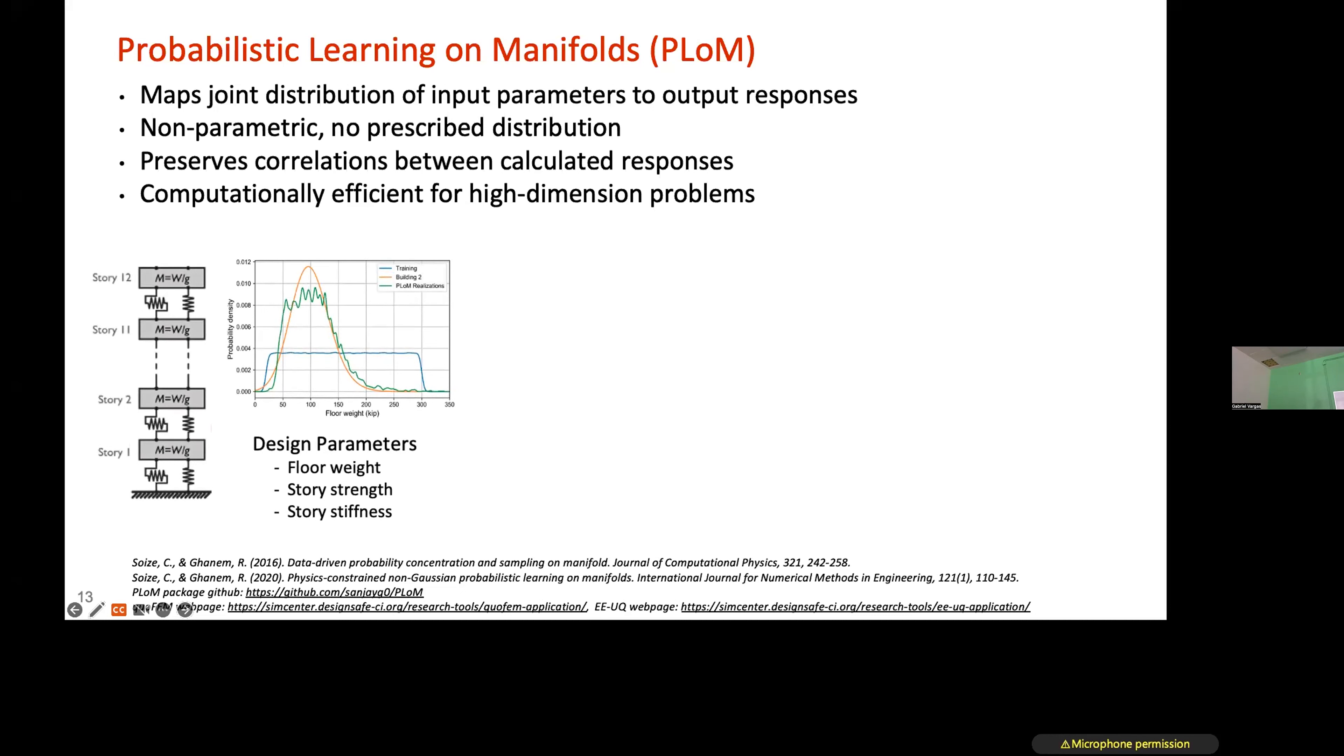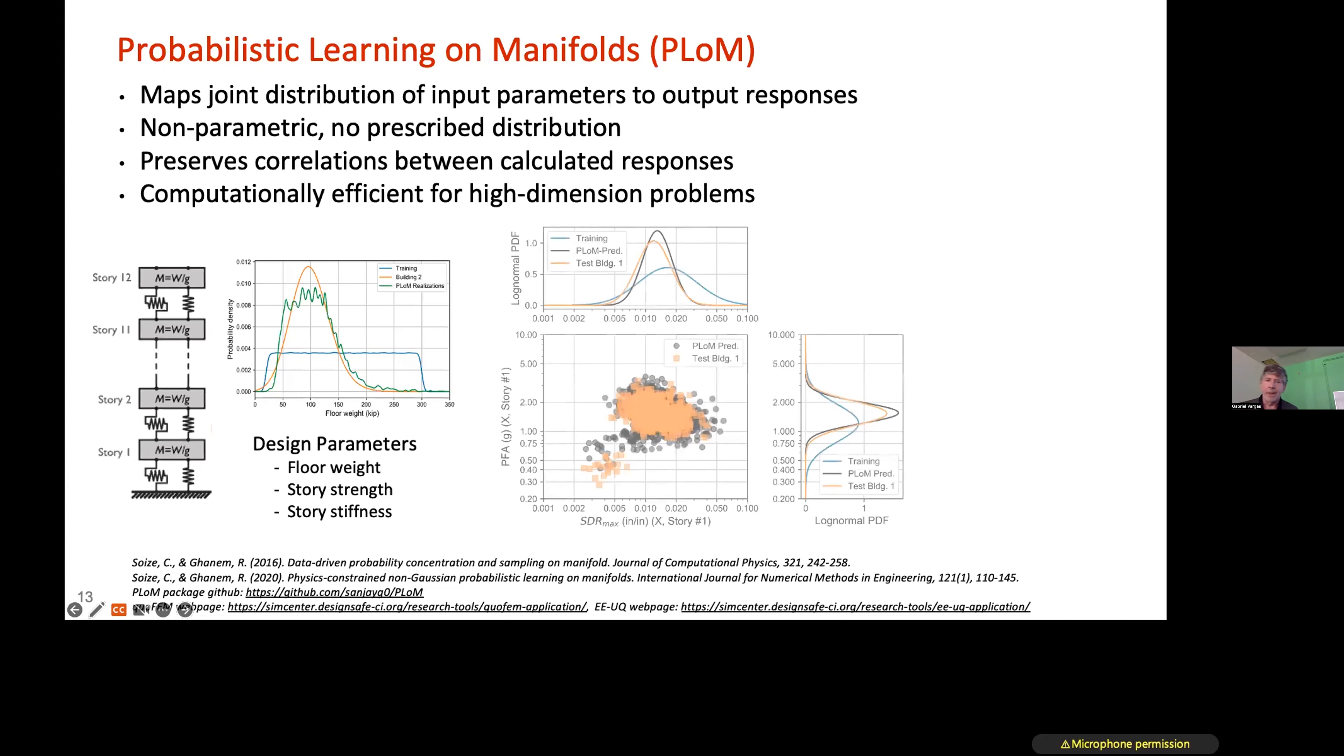We're keeping the data in the surrogate model as a way to cleverly interrogate the data very quickly when you want to get an estimate. It's a non-parametric model. You have no prescribed distributions built into it that you have in some Gaussian process models. An important thing, it preserves correlation between calculated responses, and it can pick up higher and higher dimensions. As an example, we looked at a 12-story building with various design parameters like floor weight. We train this model similar to what we did with the ground motions. We pick a whole bunch of weights to train the model, and when we want to apply the model for a certain distribution of floor weights or any other structural property, we could build that in when we want to get an estimate out of that model.